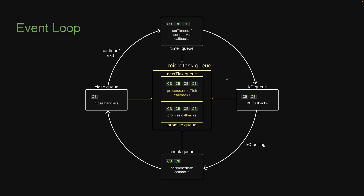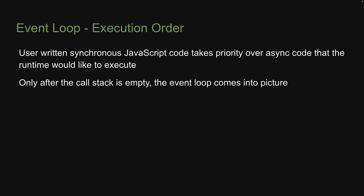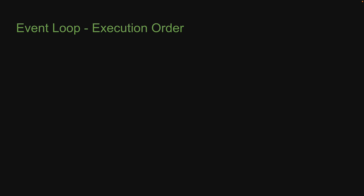Speaking of which, let's understand the priority order of the queues. The arrowheads are already a giveaway, but it is very easy to get confused, so let me explain. First, all user-written synchronous JavaScript code takes priority over asynchronous code that the runtime would like to execute. Which means, only after the call stack is empty does the event loop come into picture. Within the event loop, the sequence of execution follows certain rules — and there are quite a few rules you have to wrap your head around.